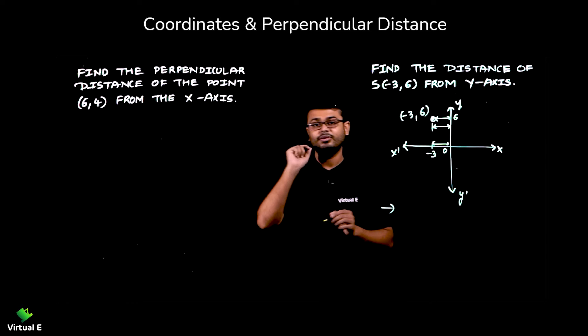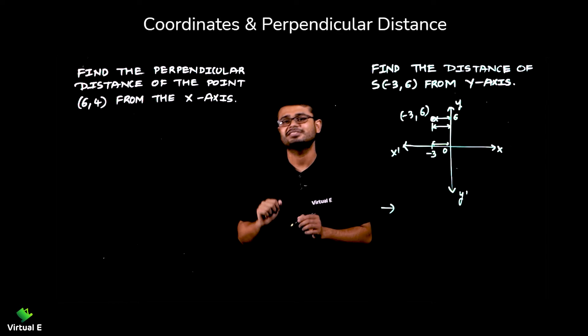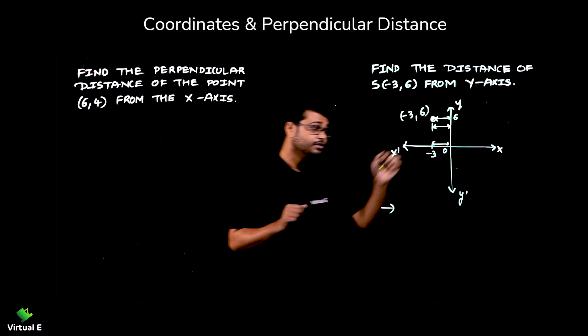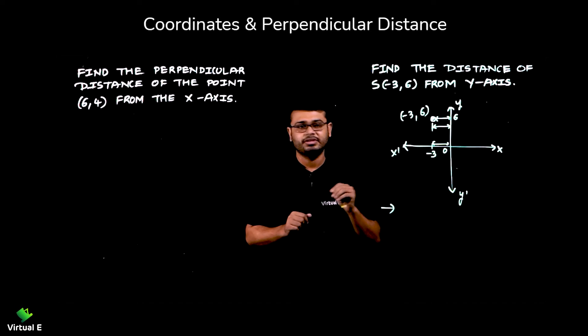The distance is, now here don't write -3 is the distance. Distance cannot be negative. Distance will be positive. The point is -3, but the distance is positive.